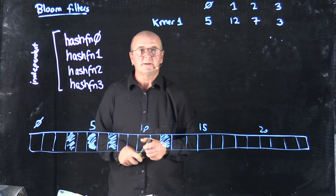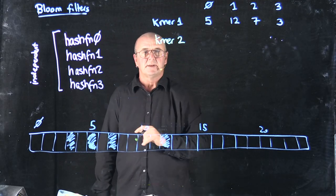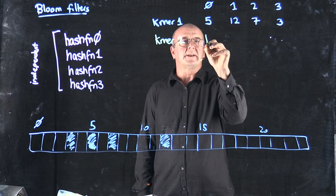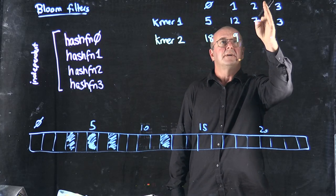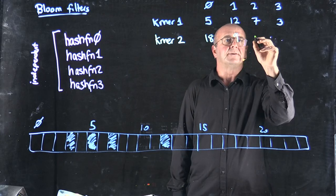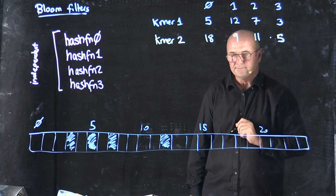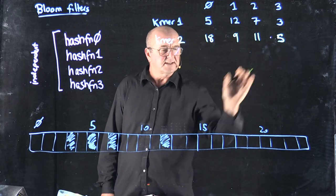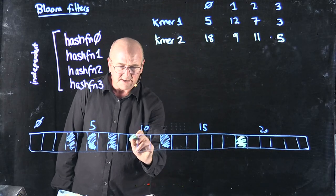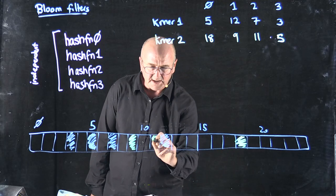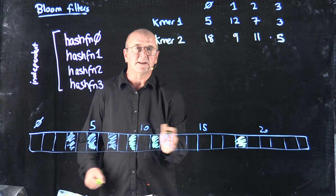Now I come back in with another KMA — KMA number 2. I pass it through my same 4 hash functions. For KMA 2, hash function 0, I get a value of 18. For hash function 1, I get a value of 9. For hash function 2, I get a value of 11. And for hash function 3, I get a value of 5. I do the same thing — for each of these I set these bits to be true. So I set 18 to be true, 9 to be true, 11 to be true, and then I get a value of 5. But 5 is already true — that's okay, I just leave it as true. I don't unset it or do anything else.